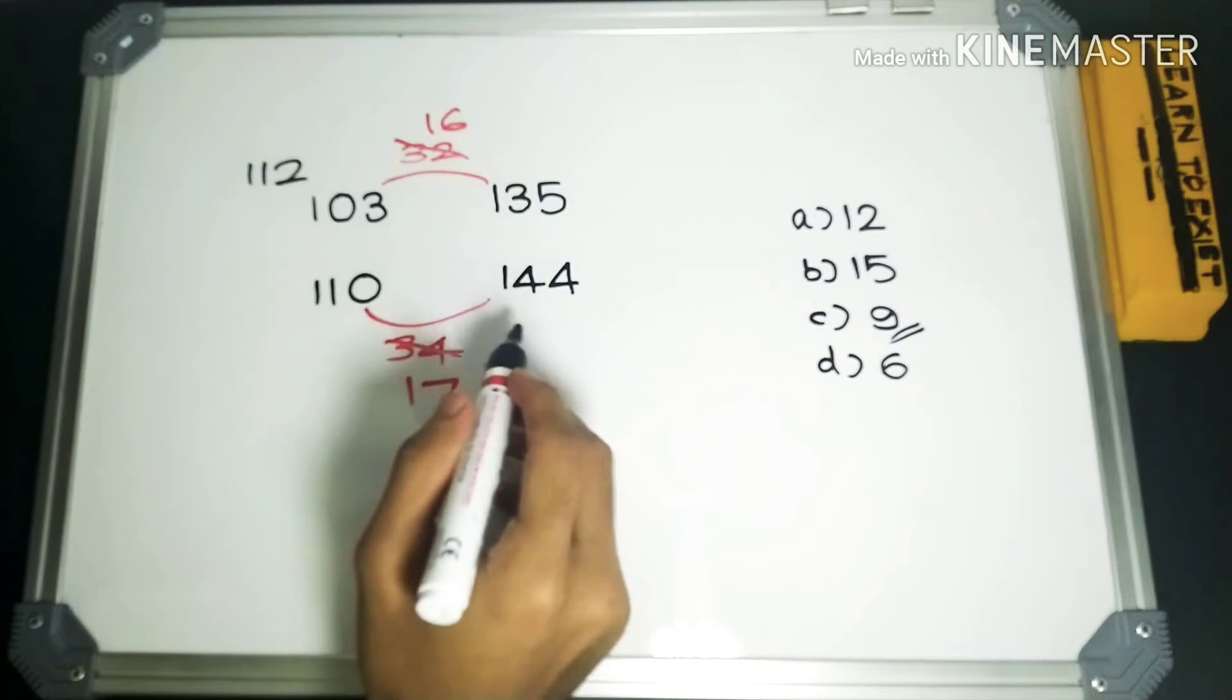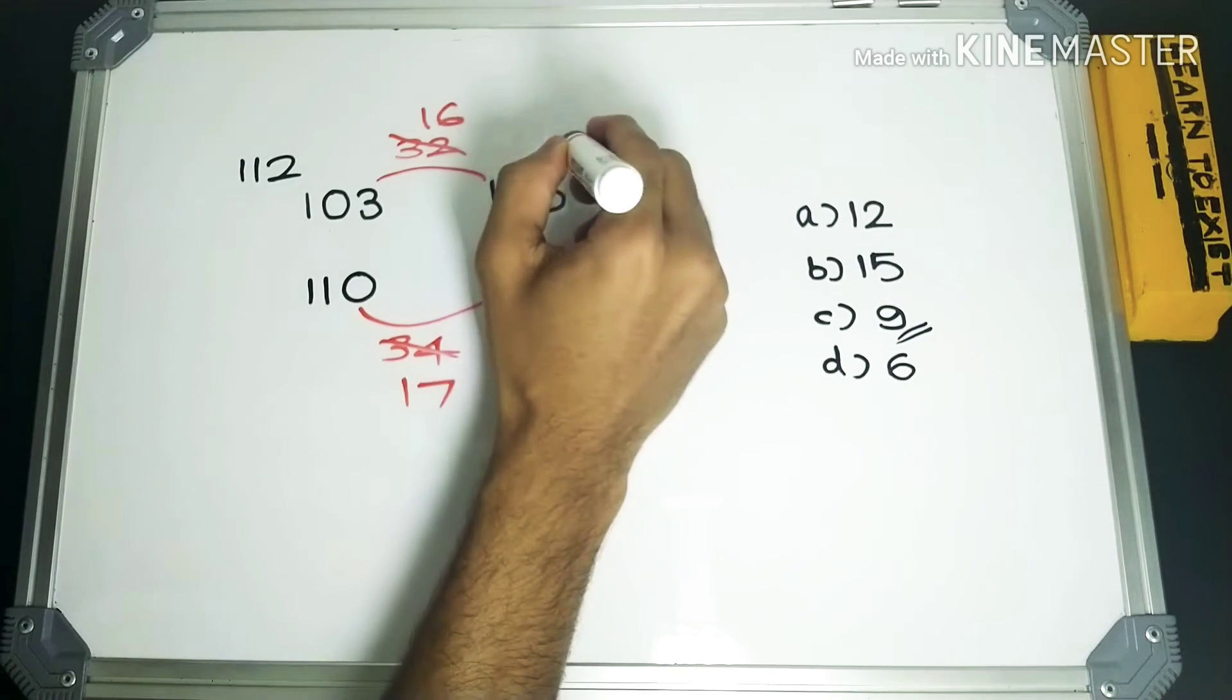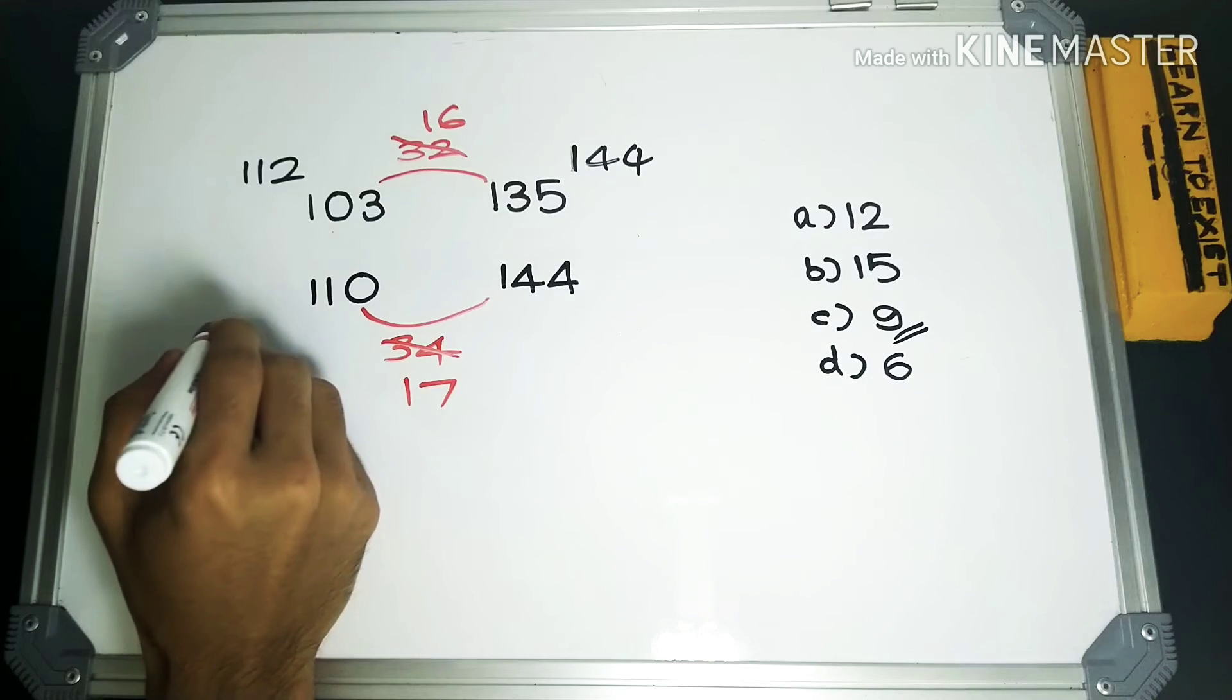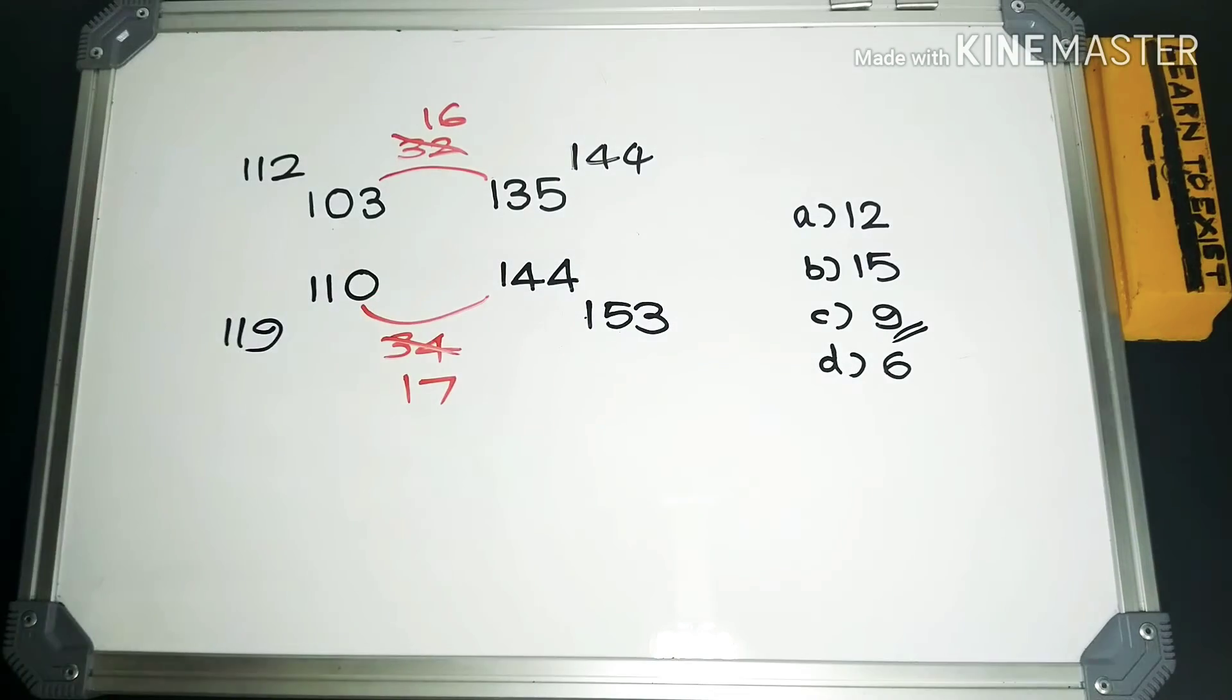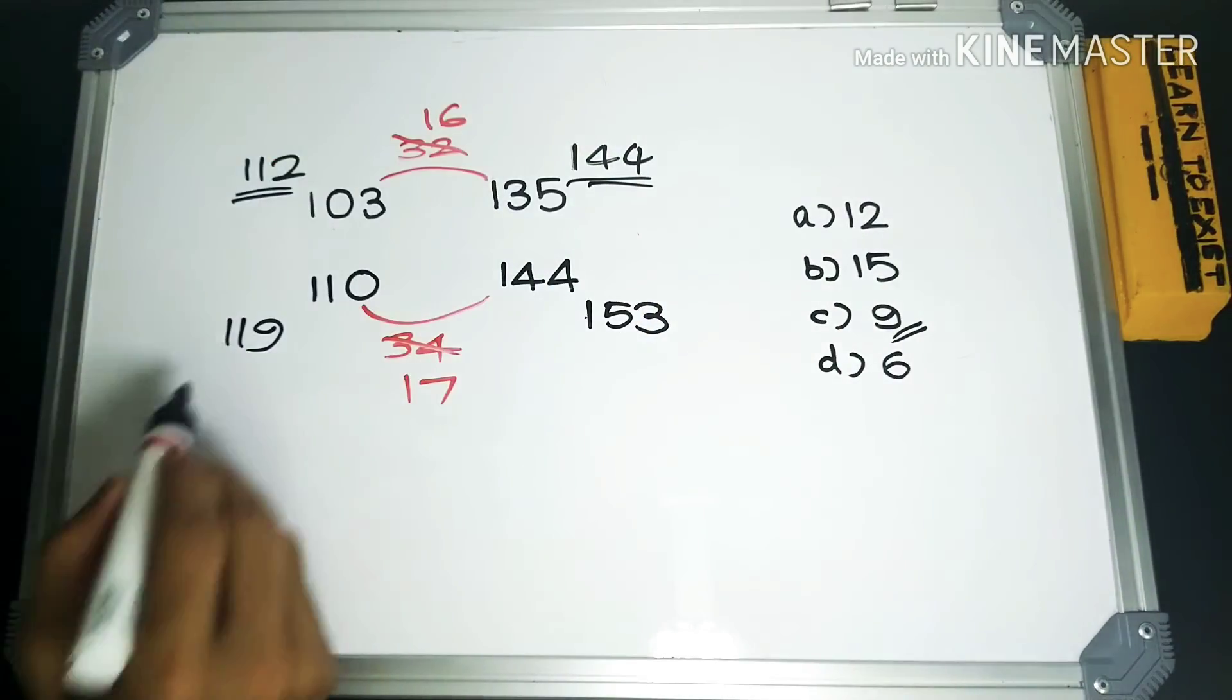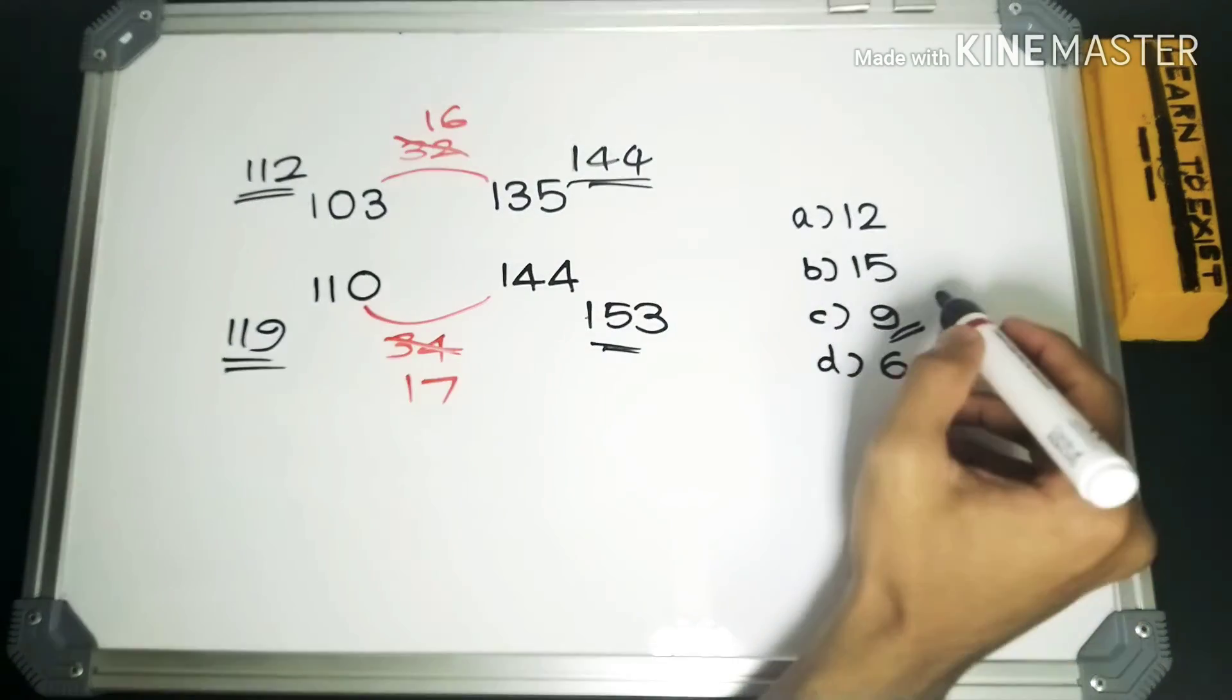Now we can write down the other numbers also. This would be 144, and this would be 119, and this would be 153. We can see that these two numbers are multiples of 16 and these two numbers are multiples of 17. So 9 will be the answer here.